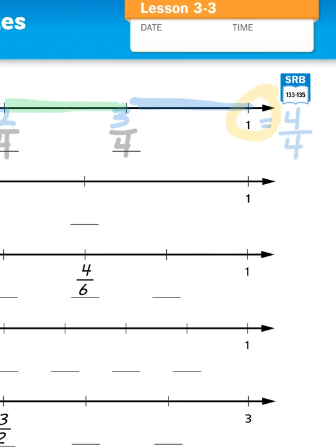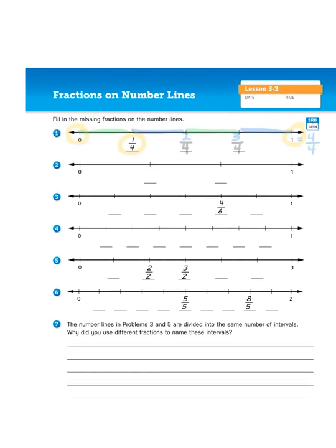If I had four quarters that would be the same as one dollar. So as you can see this number line is divided into four sections. Four fourths between 0 and 1.